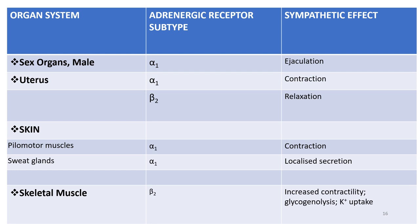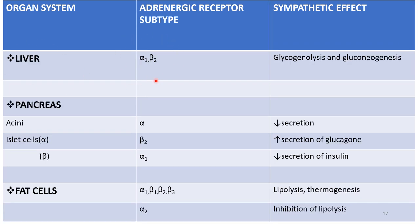Alpha-1 receptors on male sex organs mediate ejaculation. Uterus has alpha-1 and beta-2 receptors: contraction and relaxation both occur. Pregnant uterus shows relaxation; non-pregnant uterus shows contraction. Piloerector muscles have alpha-1 receptors causing contraction. Sweat glands have alpha-1 receptors causing localized secretion. Skeletal muscle has beta-2 receptors increasing contractility, glycogenolysis, and potassium uptake. Liver has alpha-1 and beta-2 receptors causing glycogenolysis and gluconeogenesis, raising blood sugar. Pancreas: alpha-1 decreases insulin secretion; beta-2 increases glucagon. Fat cells: lipolysis and thermogenesis occur; alpha-2 inhibits glycogenolysis.